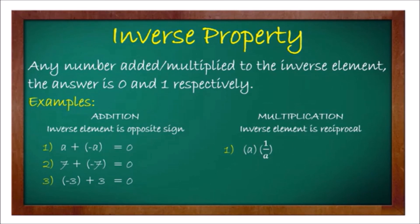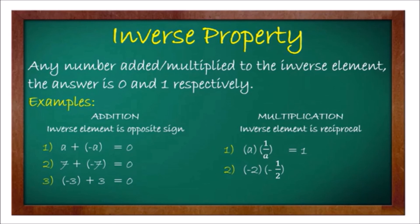For multiplication, the inverse element is the reciprocal. A times 1 over a equals 1. For example, negative 2 times negative one-half equals positive 1, because a negative times a negative is positive. Another example: one-third times 3 equals 1, since the reciprocal of one-third is 3.